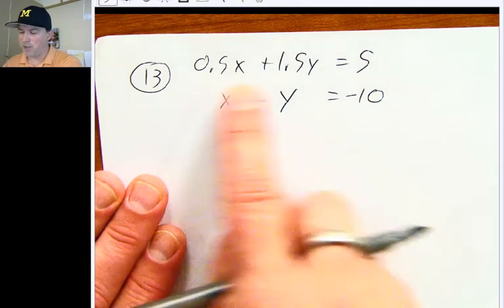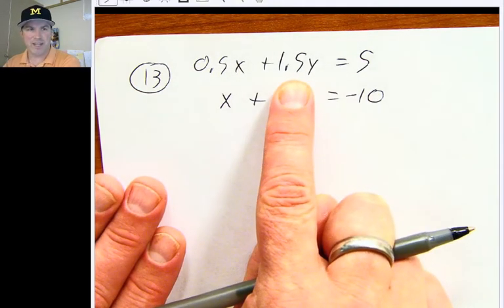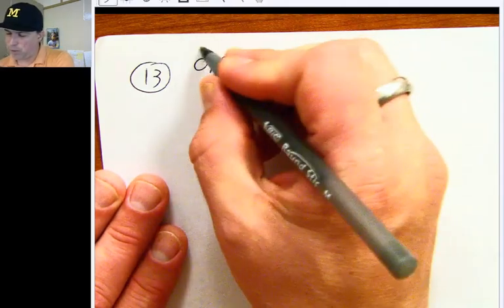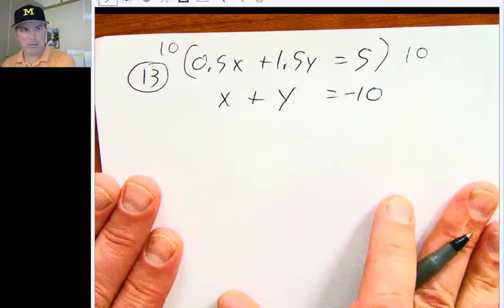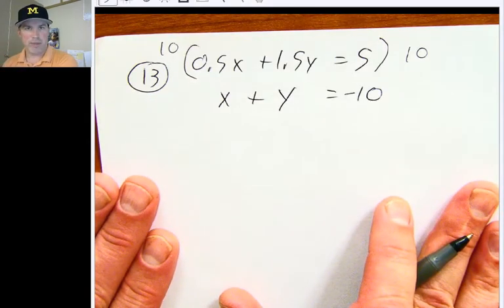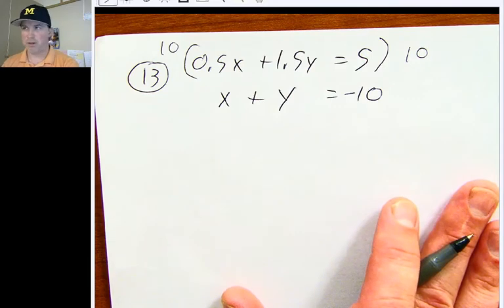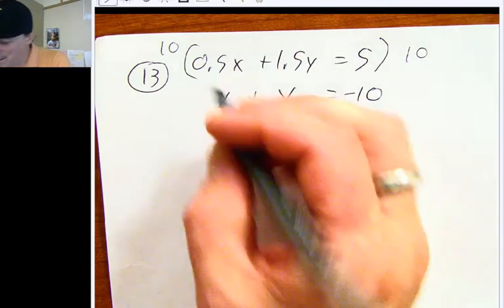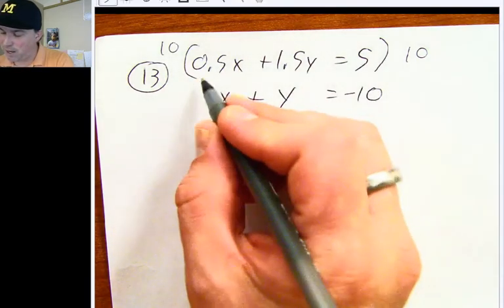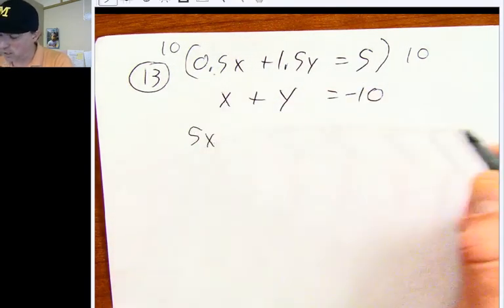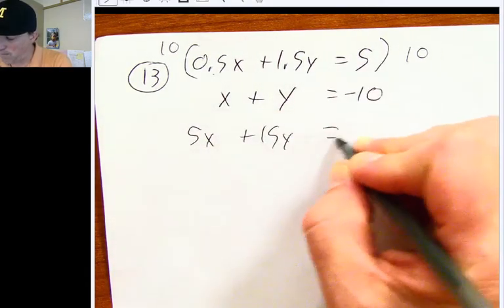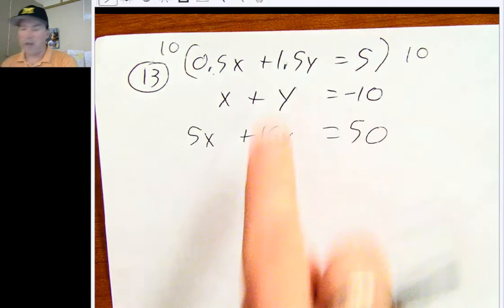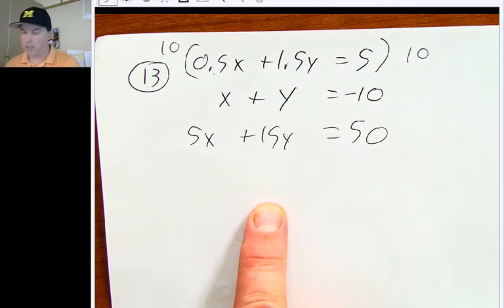So let's say I had 0.5x plus 1.5y equals 5. And the second equation is x plus y equals negative 10. If you are uncomfortable dealing with decimals, the best thing to do is to quickly eliminate those decimals. I noticed that each of these decimals goes a tenth deep. Because they both go a tenth deep, if we multiply both sides by 10, 10 times 0.5 is 5x, 10 times 1.5 is 15y, and 5 times 10 is 50.